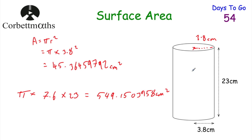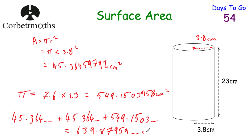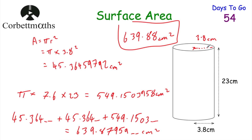So that's the curved surface area. To find the total surface area of the cylinder, we add together the area of the circle, another area of the circle, and the curved surface area. So 45.364 plus 45.364 plus 549.1503, giving us a total surface area of 5092 over 25 pi, or 639.87959 centimetres squared — rounded to two decimal places, that's 639.88 centimetres squared. That's the surface area of the cylinder.